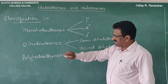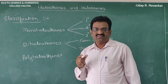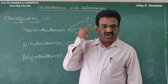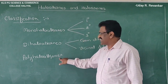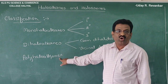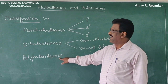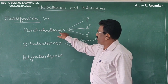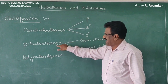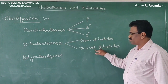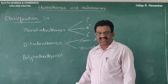If a compound contains more than two halogen atoms, these are called polyhalides. So the three classifications are: monohalides, dihalides, and polyhalides.